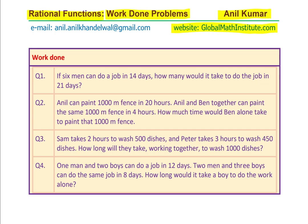Question number one: if six men can do a job in 14 days, how many would it take to do the job in 21 days? We will understand the simple concept with this example and then do the rest. Question two: Anil can paint a thousand-meter fence in 20 hours. Anil and Ben together can paint the same thousand-meter fence in four hours. How much time would Ben alone take to paint that thousand-meter fence?